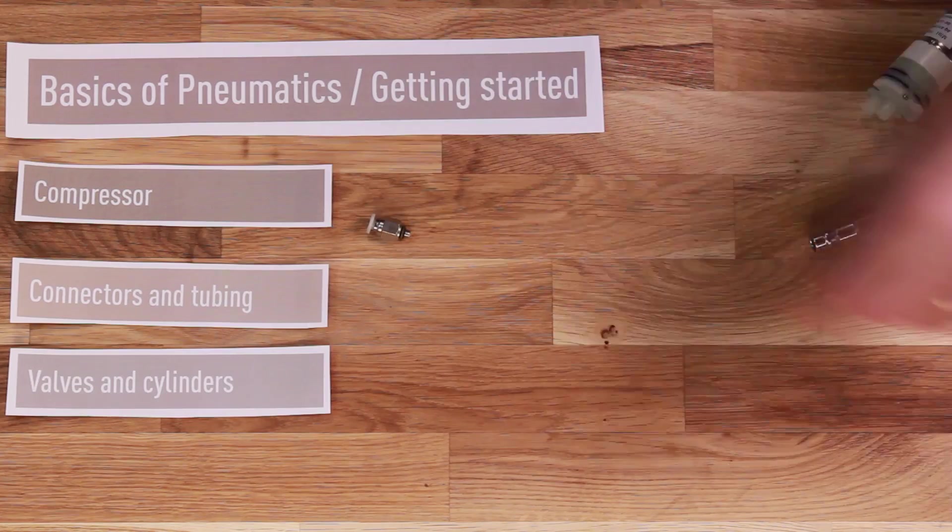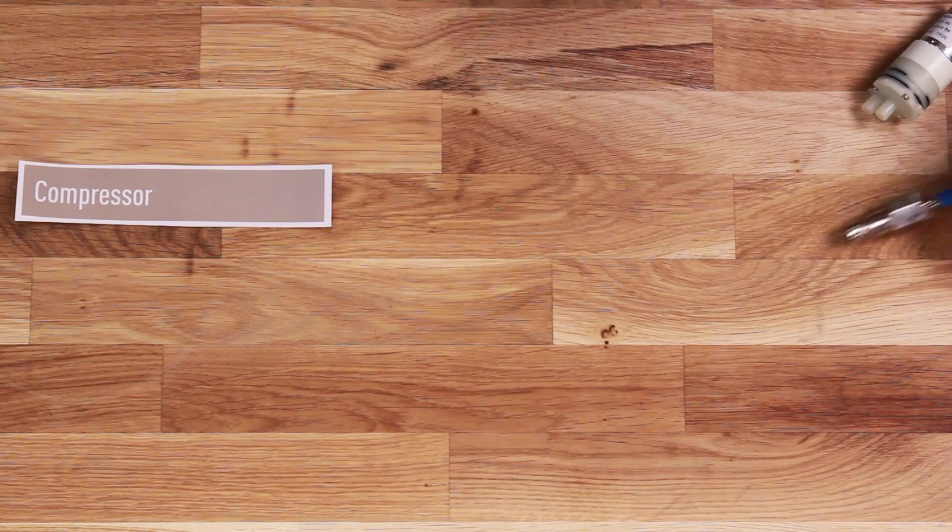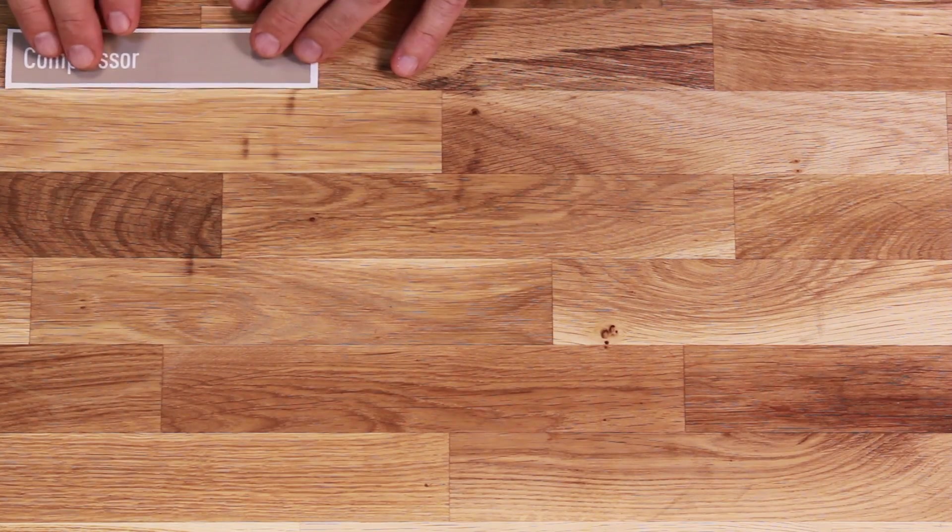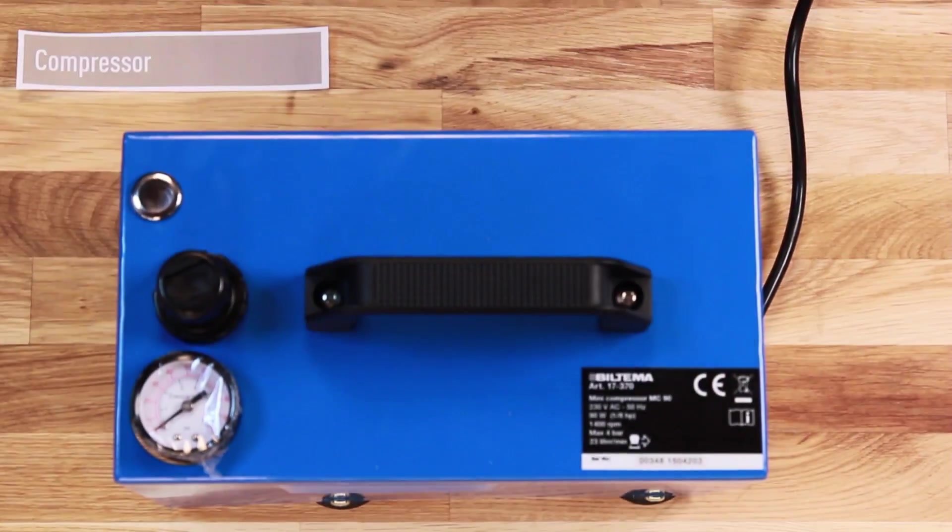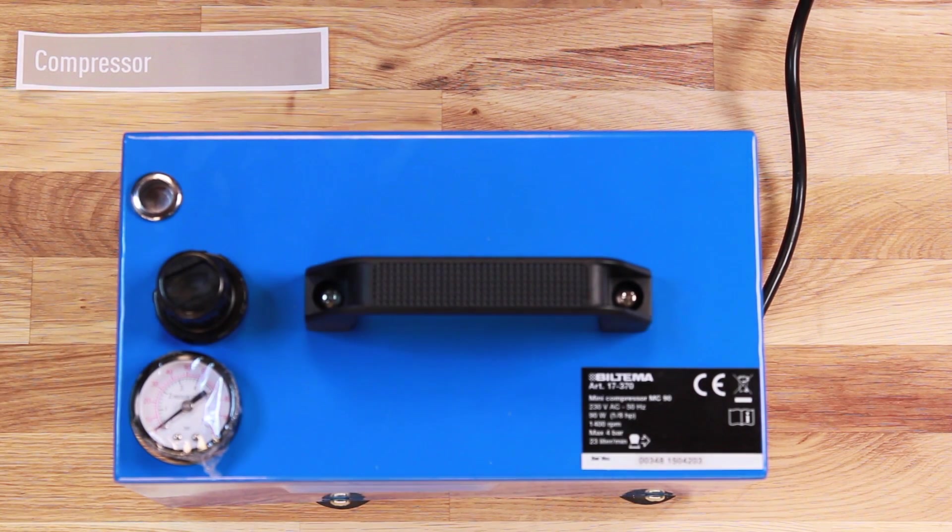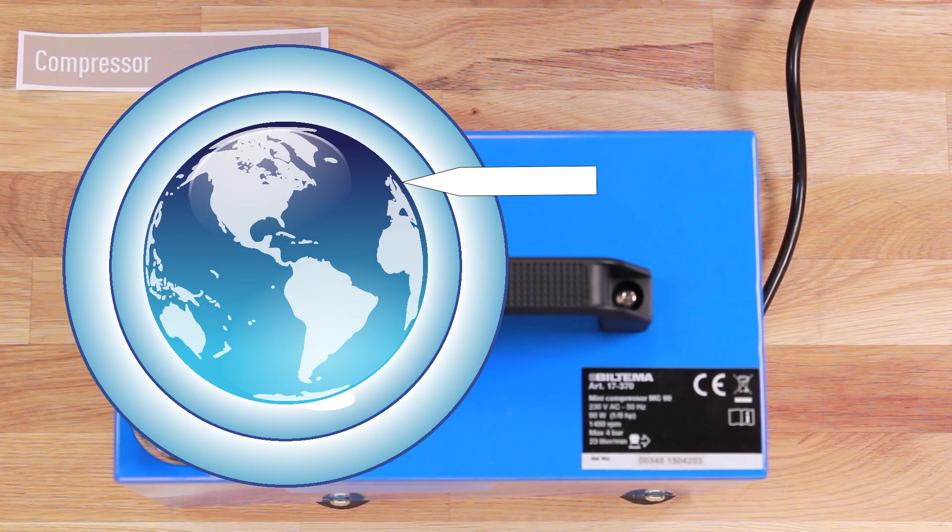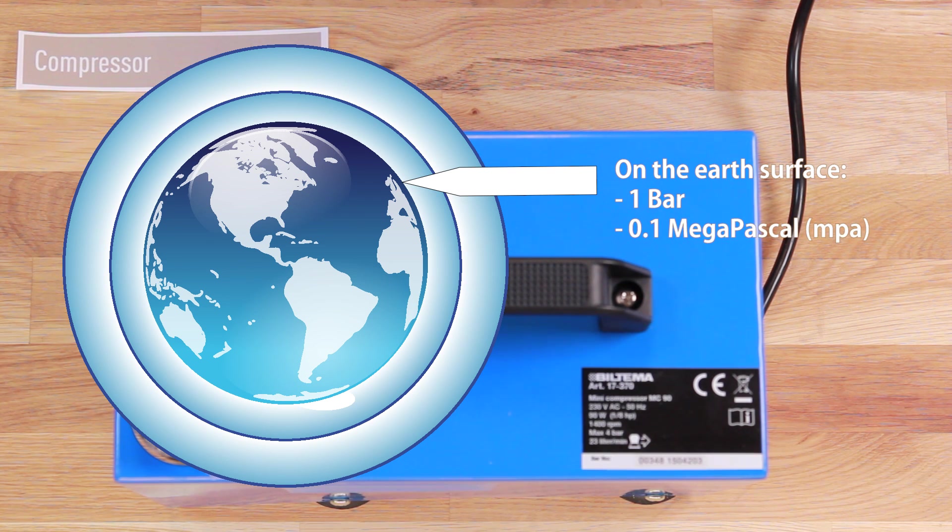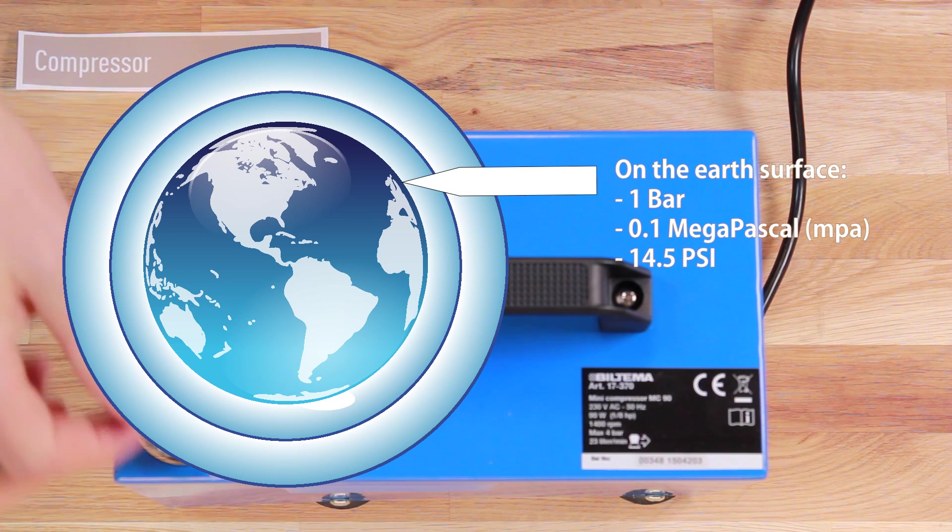Compressors come in different sizes and the size of the compressor will generally reflect the pressure you can produce with it. Smaller compressors like this one, which is an airbrush compressor, can deliver about four bars of pressure. Bars is the standard measurement of atmospheric pressure, so one bar is the pressure that you have around you just now. This translates to a pressure of 0.1 MPa, and then you have the American unit of PSI. So one bar, 0.1 MPa equals 14.5 PSI or pounds per square inch.